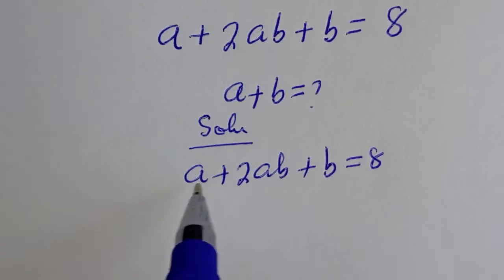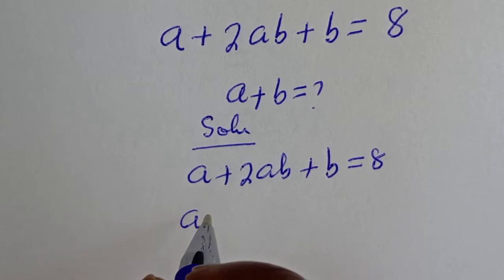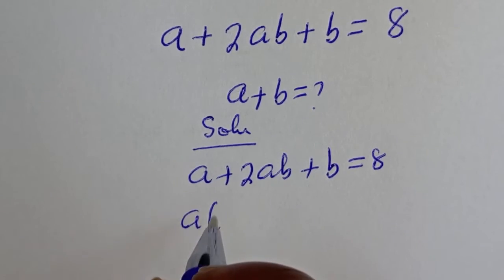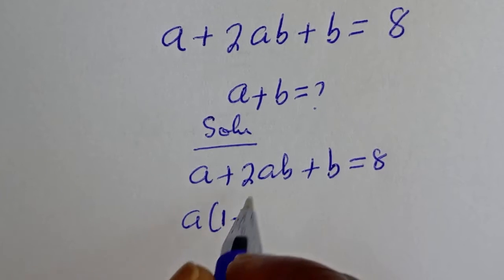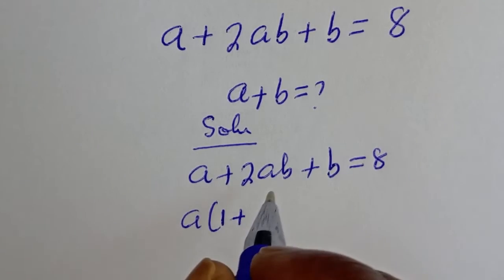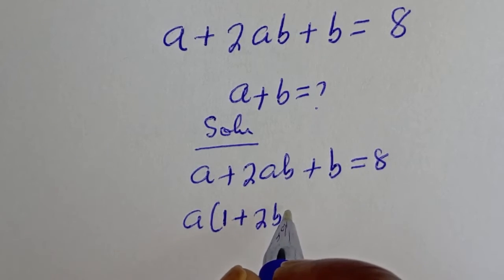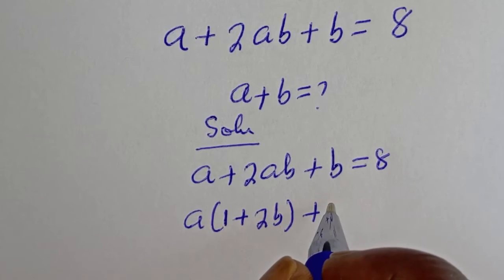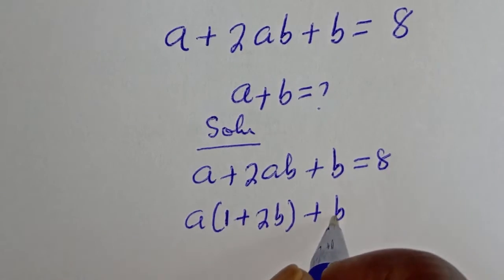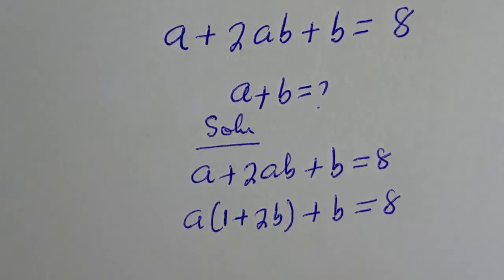We have a plus 2ab plus b is equal to 8. Then, if you look at these two, a is common. Let's bring it out. a bracket 1 plus 2ab plus b is equal to 8.